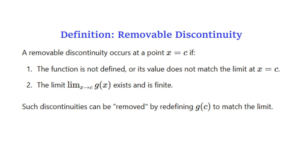In summary, a removable discontinuity occurs at a point s equals c — like in our example where c equals 1. It occurs if: (1) the function is not defined at that point, or its value does not match the limit at x equals 1; and (2) the limit as x tends to c of g(x) exists and is finite. The discontinuity can then be removed by redefining g(c) to match the limit.